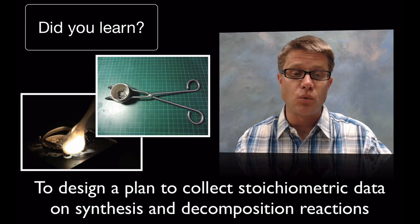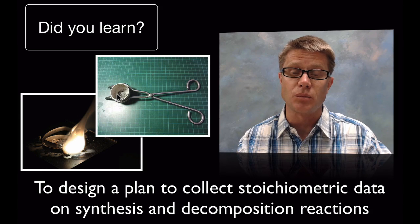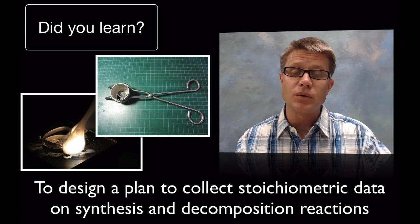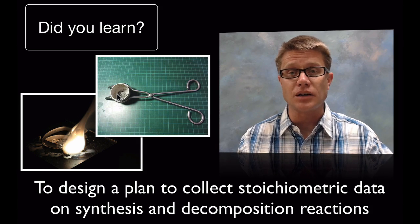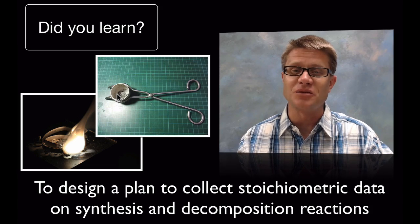Well one way to do it would be to weigh the magnesium to start. We could put it in a crucible. Heat it up. And then we could weigh it when it's done. We could figure out the mass of the products and we could work backwards to figure out how much oxygen is actually being added. And I hope that was helpful.